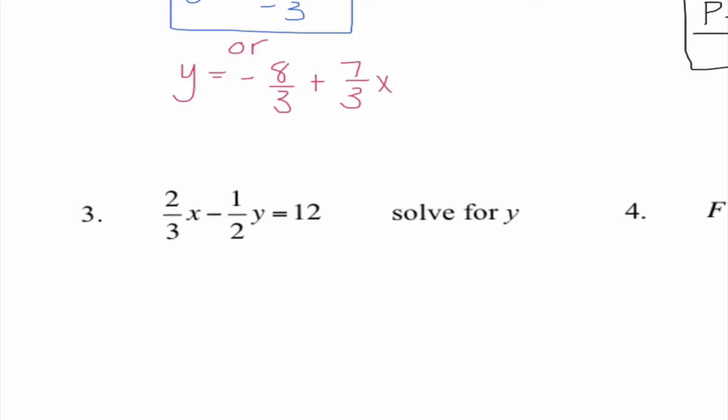But in order to get rid of the fractions, I would multiply by the LCD. The LCD here would be the smallest number that 3 and 2 both go into, which would be 6. So I'm going to multiply all three of these terms by 6, and I wrote it as 6 over 1 just to help me out in remembering that I'm only multiplying the numerator by 6. When I distribute, I get 4X minus 3Y equals 72.